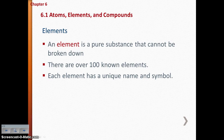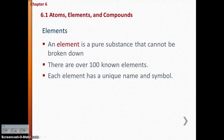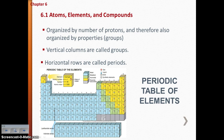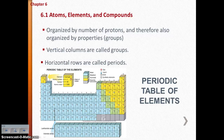An element is a pure substance that cannot be broken down. There are over 100 known elements, each with a unique name and symbol found on the periodic table. Each element has a specific atom with a certain number of protons, neutrons, and electrons. The periodic table is organized by the number of protons — and therefore also by properties. Vertical columns are called groups; horizontal rows are called periods.